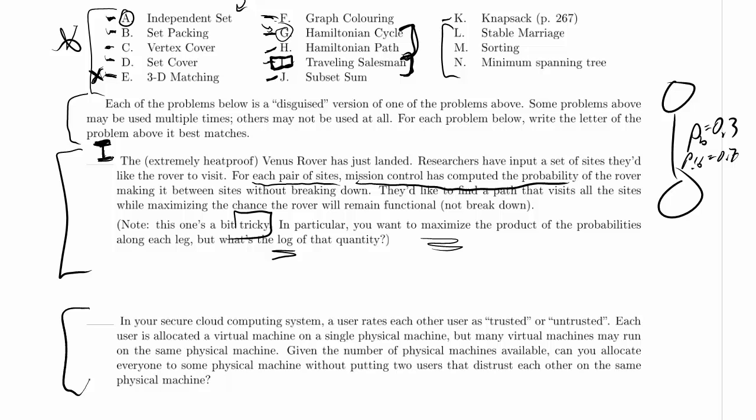So right away, a user rates each other user. This sounds, again, to me like there's an edge. And trusted or untrusted, that doesn't sound like a weight. If it was how much do they trust them, that would be a weight.